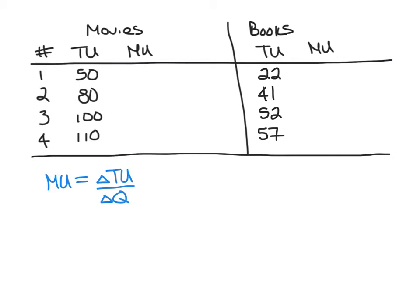When she goes from having no movies to having one movie, her total utility increases to 50, so the marginal utility of the first movie is 50. When she goes on to a second movie, her total utility increases to 80 — a change of 30 — so her marginal utility of the second movie is 30 utils. When she moves to a third movie, her total utility increases to 100, which is an increase from 80 to 100, so the marginal utility is 20 for the third movie.